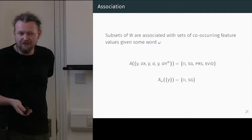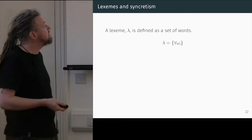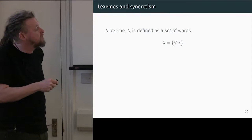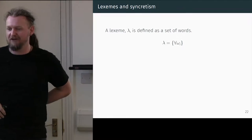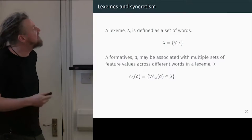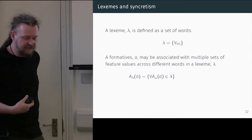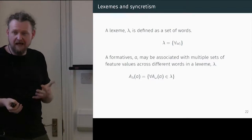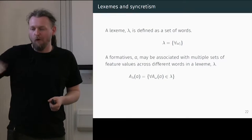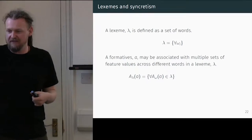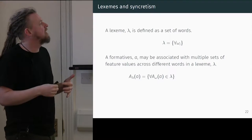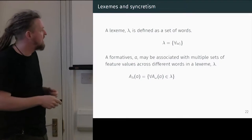From this basic set of definitions, we can define more complex relationships. We can talk about lexemes: a lexeme is just a set of words which share a certain property. A lexeme lambda is simply all words with some property I — maybe they all share an infinitive. The jury's still out on exactly what a lexeme is, but we can work it out. A given formative might have different features associated with it in different words of a lexeme — a suffix might be genitive or dative or accusative, for instance.